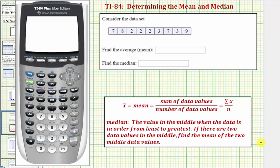Welcome to an example on how to use the one-variable stats tool on the TI-84 to determine the mean and median of a data set. Here we're given our data set and asked to find the average or mean as well as the median.